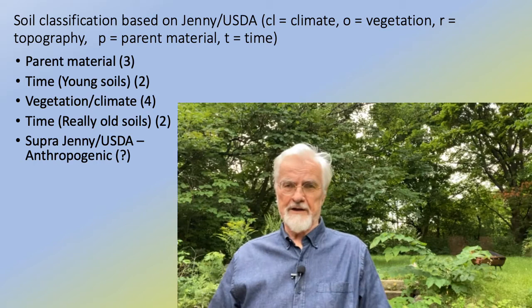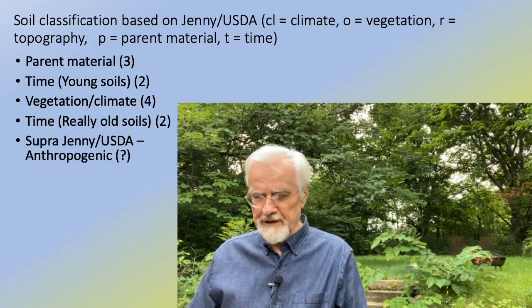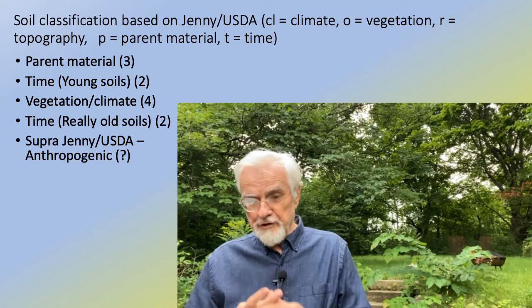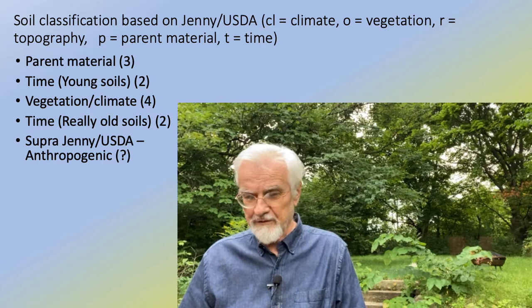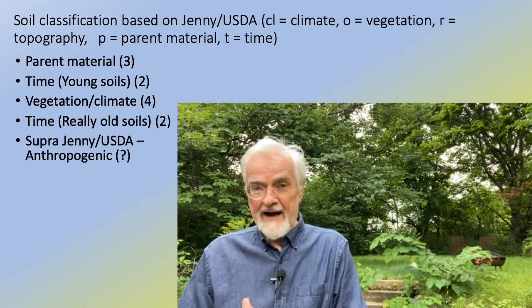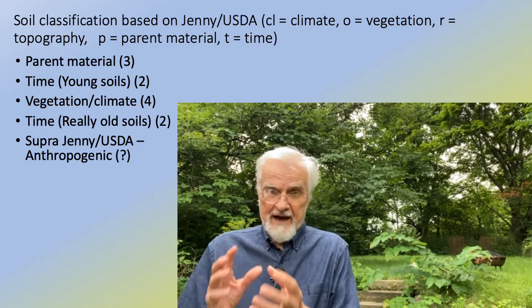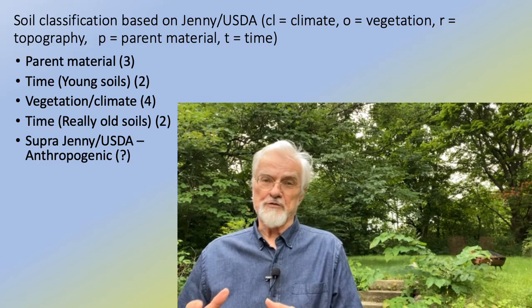Using this framework, we'll cover the 12 USDA classic soil types and add interpretation of where those types come from. Three types are based on parent material only. Two are young soils based on time. Four are based on vegetation and climate combined. Two more are very old soils. There's also a 13th category — anthropogenic soils — which I'll cover in the next lecture.